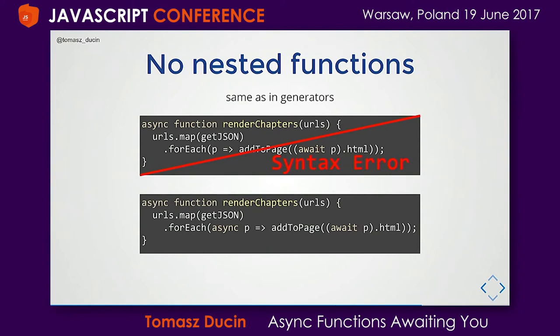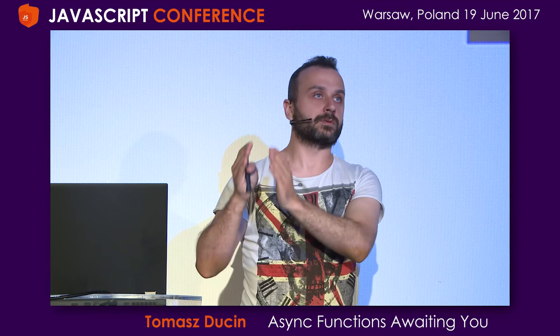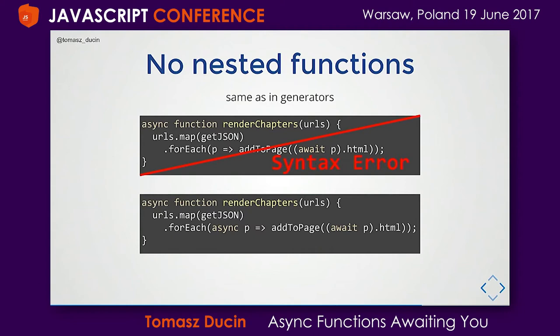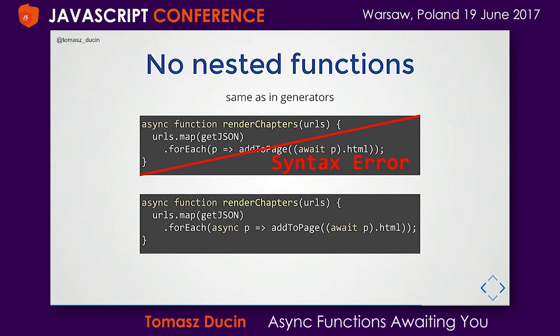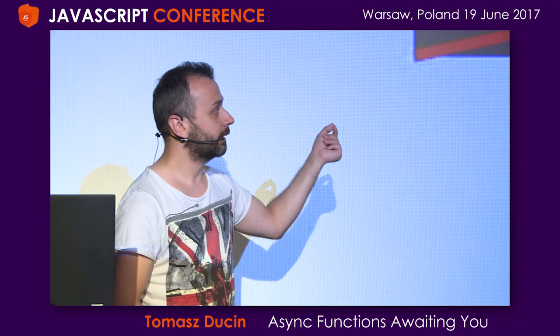We might turn the arrow function into an async arrow function to make it work, but unfortunately this will run in parallel because having a list of promises, we're synchronously registering operations. The order in which responses come back to the browser is non-deterministic. The solution is to fall back to promises and use array.reduce to force sequential execution.